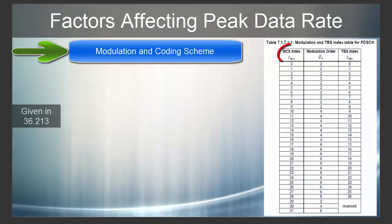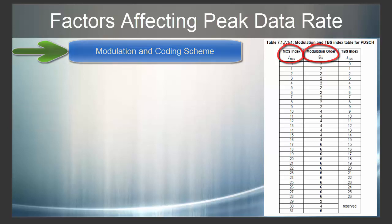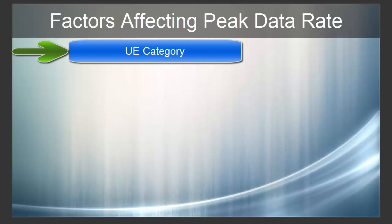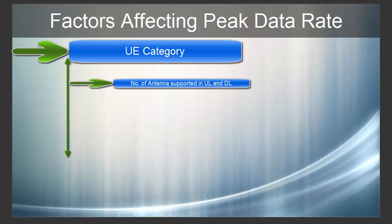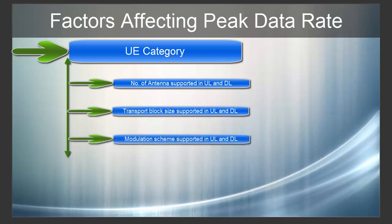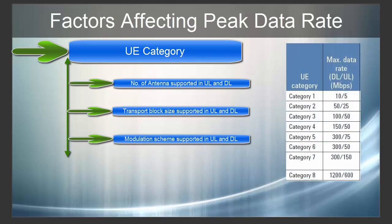This table shows MCS index and modulation order, which describes the type of modulation. We will talk about the third column, TBS index, later. The fourth factor is UE category. There are many factors that vary based on UE category, such as number of antennas supported in uplink and downlink, transport block size supported, and modulation scheme supported. We will calculate data rate for Category 3 and Category 6 UE and see how these factors affect data rate.